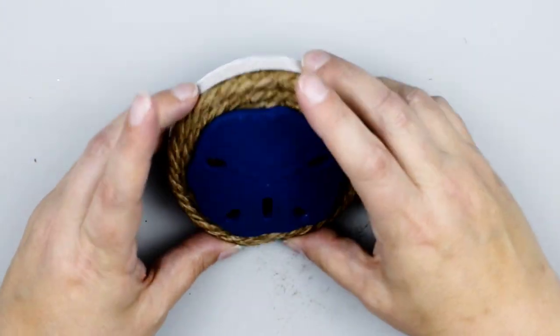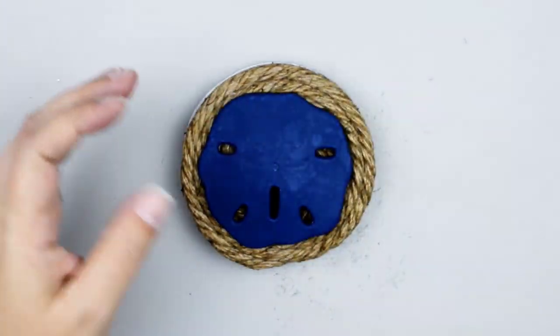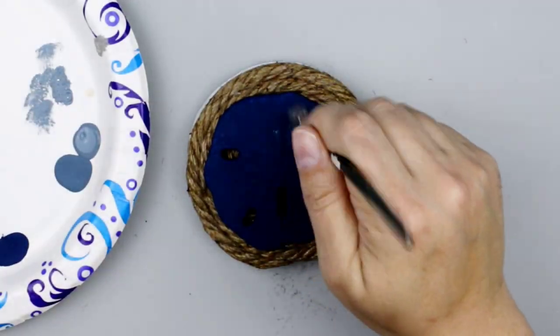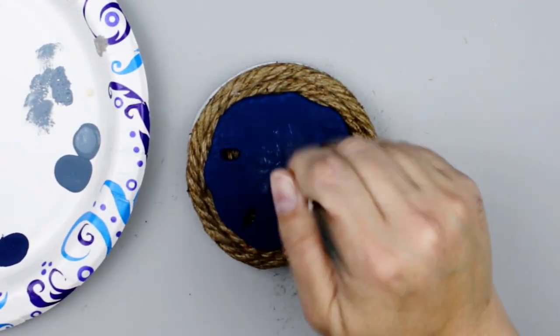This sand dollar is one of the plaster sand dollars that the Dollar Tree carried. It was white and I painted it blue and now I'm going to dry brush it with some Nantucket blue.